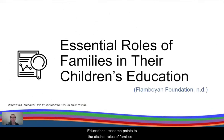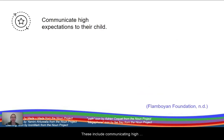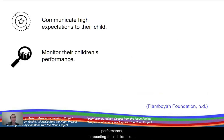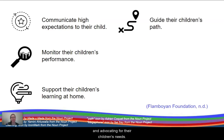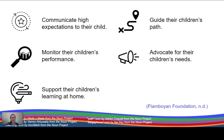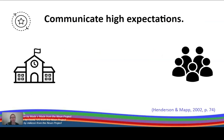Educational research points to distinct roles of families in their children's education. For example, the Flamboyant Foundation identifies five essential roles that families play. These include communicating high expectations to their children, monitoring their children's performance, supporting their children's learning at home, guiding their children's path, and advocating for their children's needs. Numerous educational research studies support the significance of these roles and suggest ways that schools can partner with families to fulfill them.